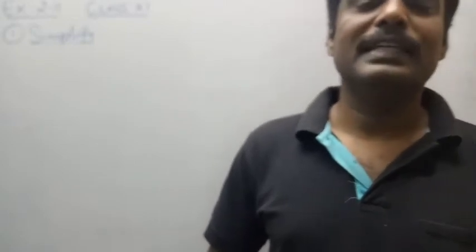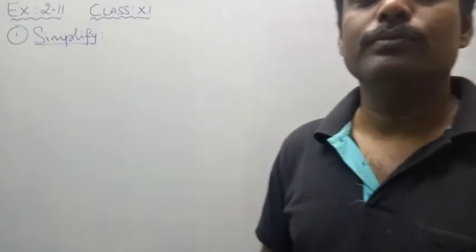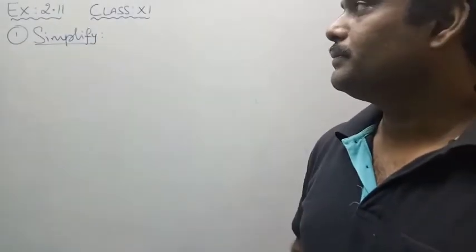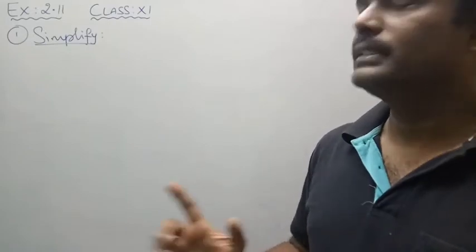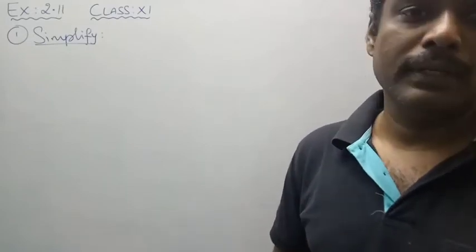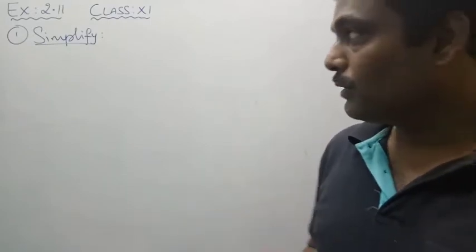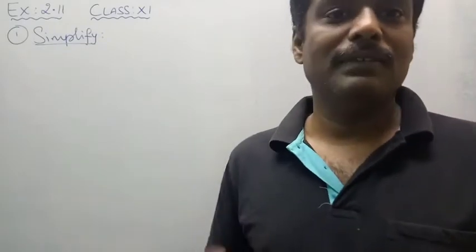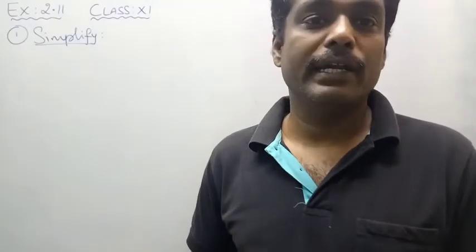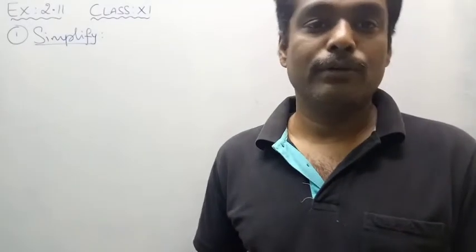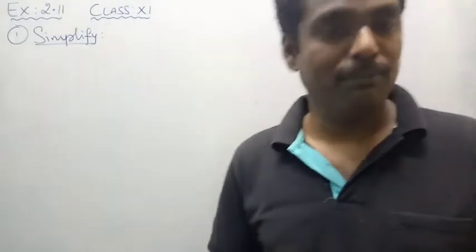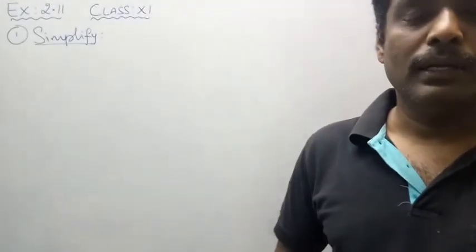Hi, my dear students. Today we will discuss Chapter 2, Basic Algebra, Exercise 2.11. Here, numbers have powers given as positive, negative, product, and quotient in different types. You want to simplify as much as possible.